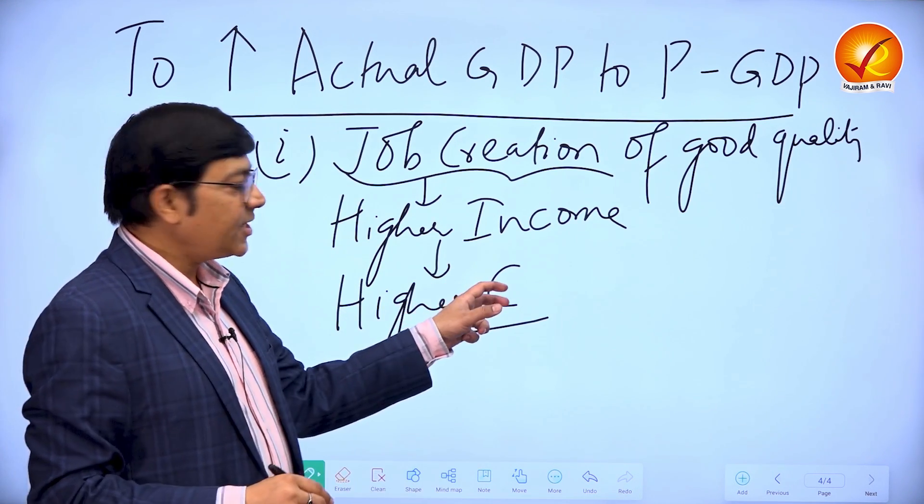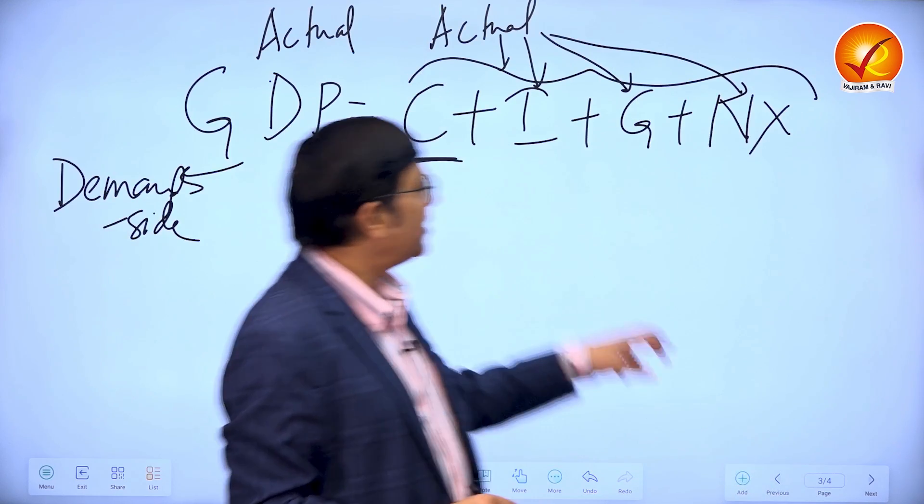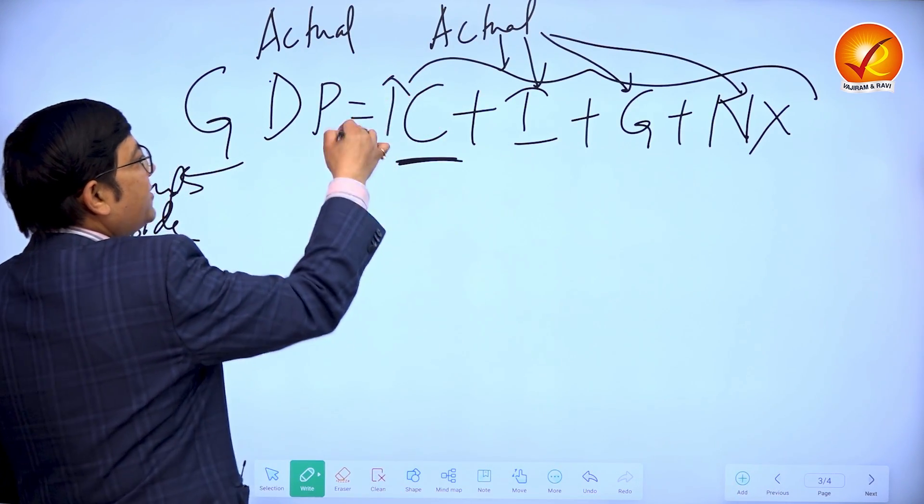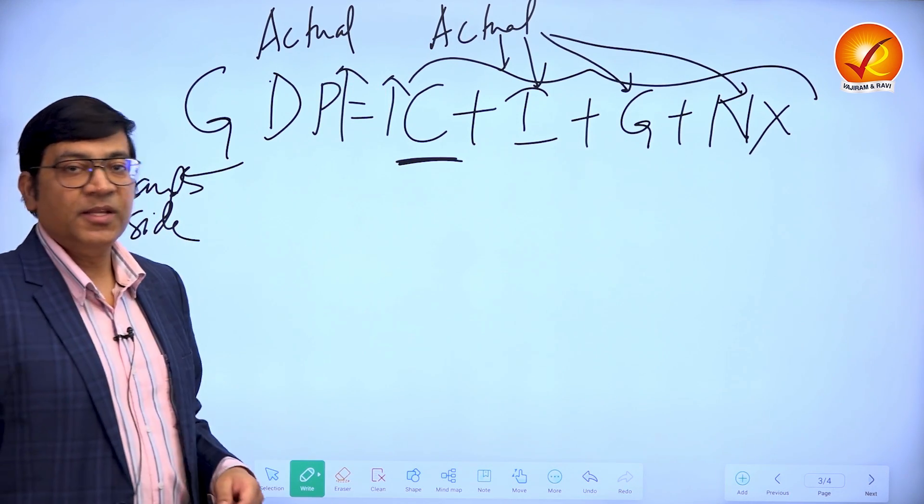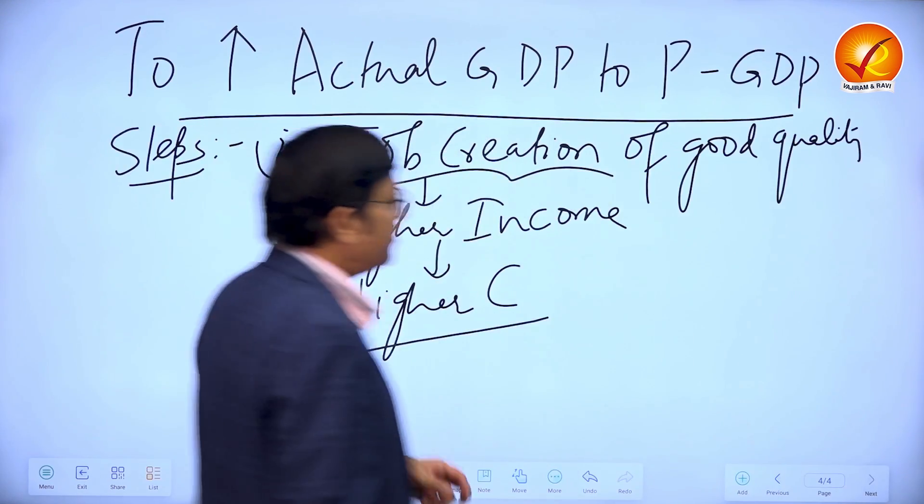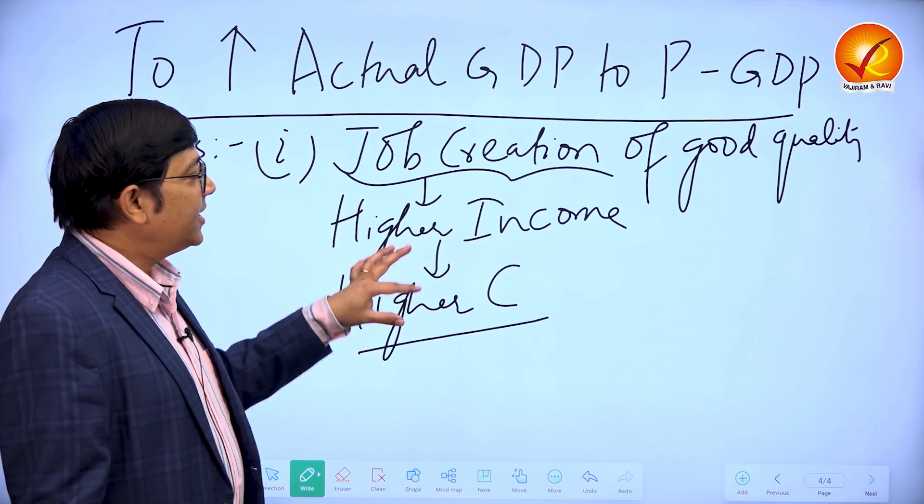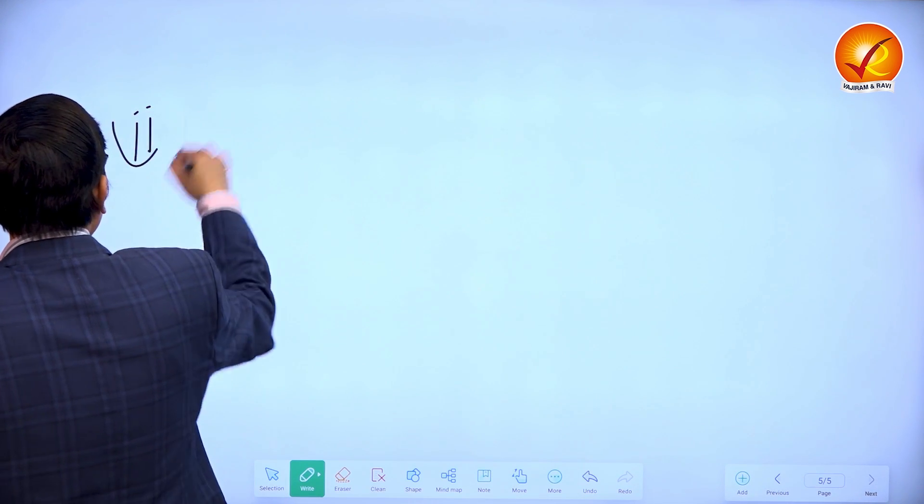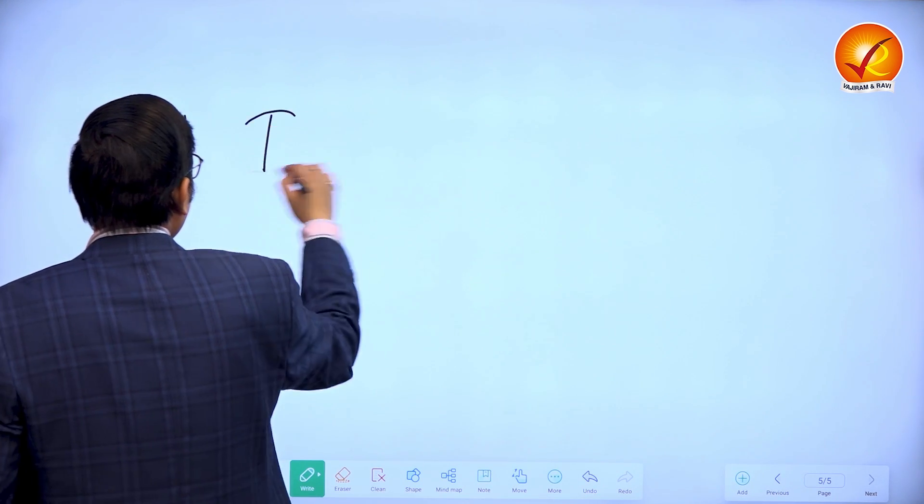Hence, the consumption expenditure which was actually relatively lower can be taken up and hence actual GDP can also be taken up. This is one example. There can be other examples similar to that. How can consumption be increased? Then in a similar way, you can say the other step that can be taken is investment promotion.